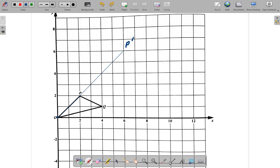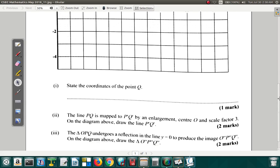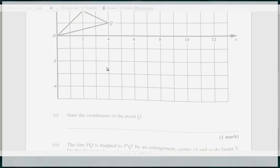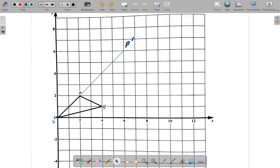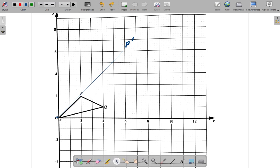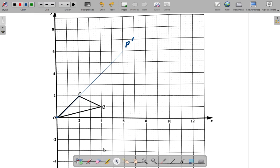Now, what about the line? It said Q prime. Let's look at it again. Q prime. The center is O. So, you start from O and draw line through Q.